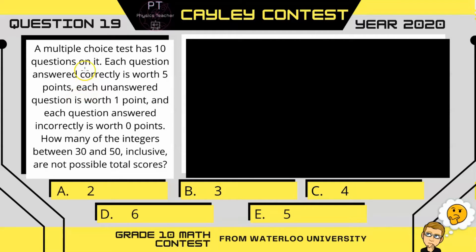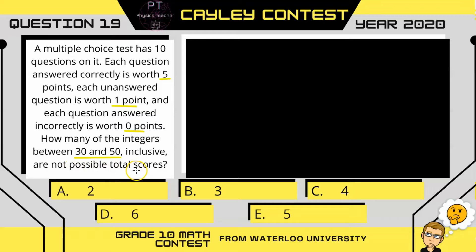So in this question, we have a multiple choice test with 10 questions on it. If you get any question correct, you get 5 points. If you get any question wrong, you get 0 points, but if you choose not to answer, you will still get 1 point. The question asks: how many of the integers between 30 and 50 are not possible scores?